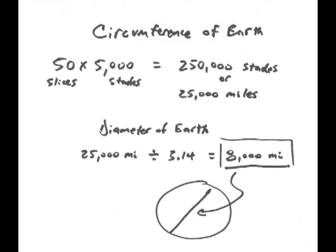So then he simply multiplied 50 times 5,000, and that equals 250,000 stades, or the modern equivalent of about 23,000 miles. Now we know it to be closer to 25,000 miles, the circumference of the Earth. Then, to find the diameter of the Earth, he divided pi, 3.14, into the circumference, about 8,000 miles.